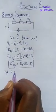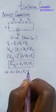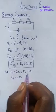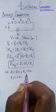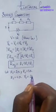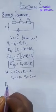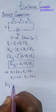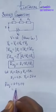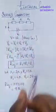Let's take an example: let R1 be equal to 2 ohms, R2 be equal to 3 ohms, R3 be equal to 4 ohms, and the voltage supply is equal to 27 volts. So the R equivalent will now be 2 plus 3 plus 4, which gives us 9 ohms. So the total resistance in this circuit is 9 ohms.